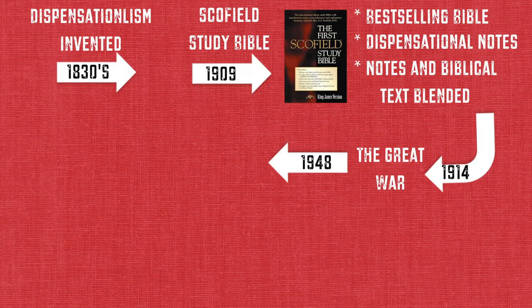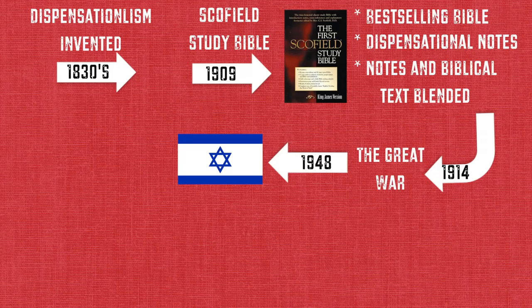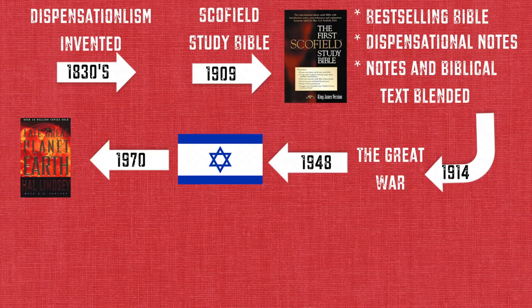Then in 1948, the unthinkable happened — Israel became an actual nation again and seemed to confirm everything that dispensationalism taught in the Scofield Bible. Then about 30 years later, Hal Lindsey published what became one of the best-selling books of the 20th century, called The Late Great Planet Earth, in which he strongly implied that Christ would return 40 years after Israel became a nation. And in the 1970s, four motion picture movies were put out called A Thief in the Night, based on dispensational theology.